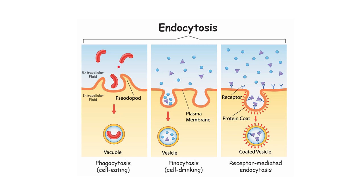Creating a vesicle when it pulls it inside. There are different forms of endocytosis, such as phagocytosis, which is referred to as cell eating — it takes bigger substances and bigger molecules into the cell, wrapping around them and bringing them in. An example of phagocytosis is when immune cells like macrophages can engulf and digest invading bacteria that enter the body.